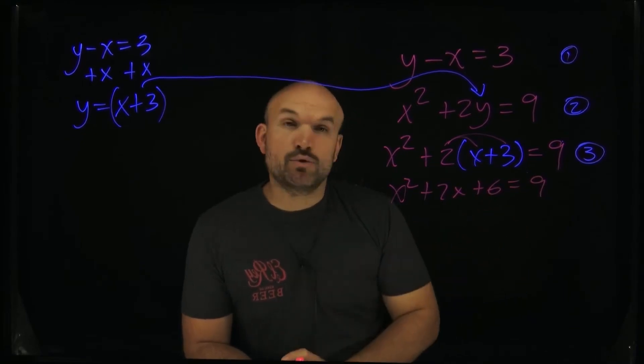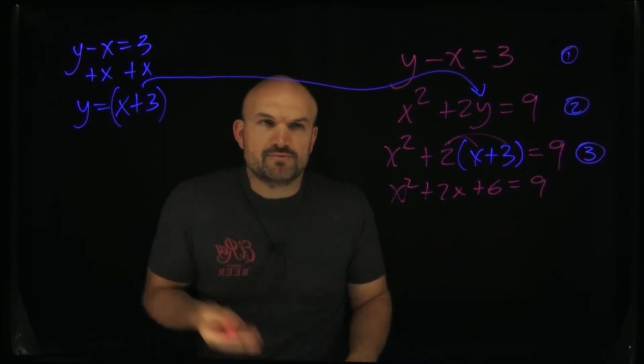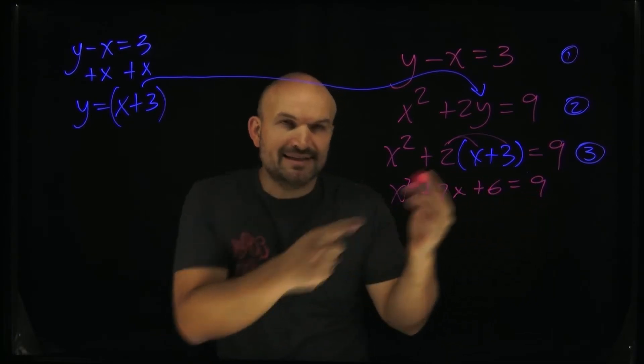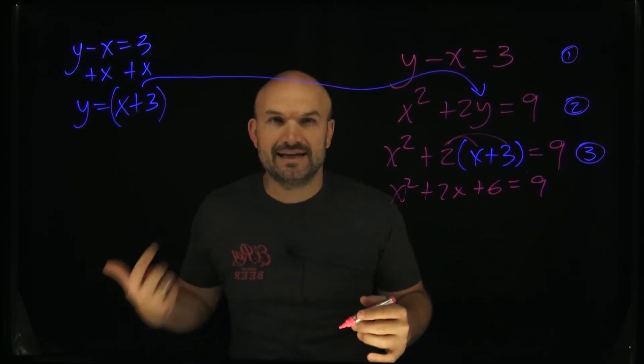OK. And now you recognize this is a quadratic. And remember, when we want to solve quadratics, what do we need to do? We need to set it equal to zero. So go ahead and subtract the nine to both sides, and then it's going to be set equal to zero.